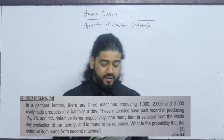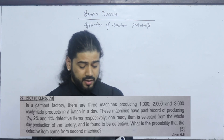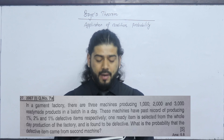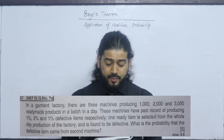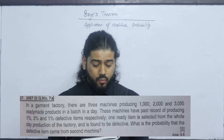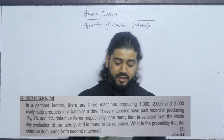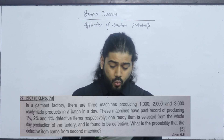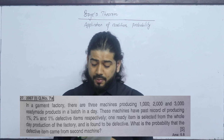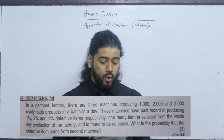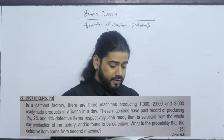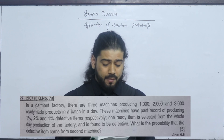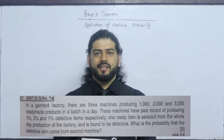In a garment factory, there are 3 machines producing 1000, 2000, and 3000 ready-made products in a batch. These machines have a past record of producing 1%, 2%, and 1% defective items respectively. One ready item is selected from the whole day's production of the factory and it is found to be defective. What is the probability that the defective item came from the second machine?